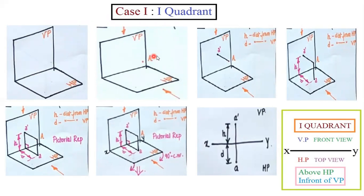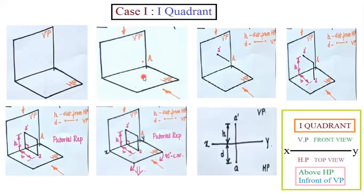Now I'm going to keep your point. This is a point A — whatever it may be, just imagine a point and name it A. When we see from front view, this is the observer. The point will be falling on the vertical plane, just like the shadow. When we see the same point from the top view, this point will be falling on the horizontal plane. So this is the concept.